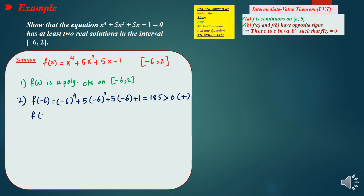The second endpoint is 2. f(2) equals 2 to the 4th plus 5 times 2 cubed plus 5 times 2 minus 1, which equals 65, and that is also greater than 0 — positive. So the second condition is not satisfied because both endpoints give positive values under the function f.